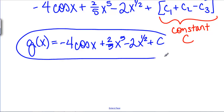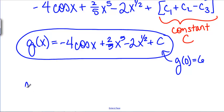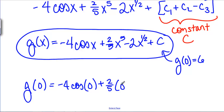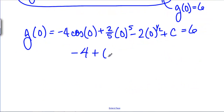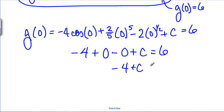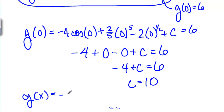This is the general antiderivative. But we want a specific solution using G of 0 equals 6. Plugging in 0: negative 4 cosine of 0 plus 2/5 times 0 to the 5th minus 2 times 0 to the 1/2 plus C equals 6. Cosine of 0 is 1, so negative 4 plus 0 minus 0 plus C equals 6, meaning C equals 10. So the original function G of X is negative 4 cosine of X plus 2/5 X to the 5th minus 2X to the 1/2 plus 10.